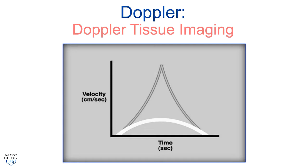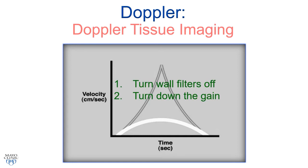Doppler tissue imaging is really a way of measuring myocardial velocities. This schematic illustrates the principles behind Doppler tissue imaging. The white bar represents the high intensity but low velocity signals from the myocardial wall. The gray bar represents the higher velocity but lower intensity signals from the blood pool. In spectral blood pool Doppler, the wall signal is considered noise, so we turn the wall filters on. But in Doppler tissue imaging, that is the signal we're interested in — so we turn the wall filters off and turn down the receiver gains.